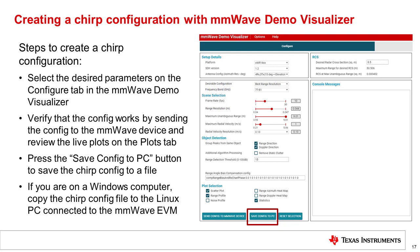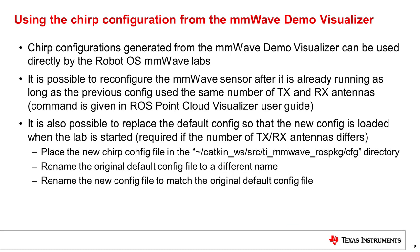If you are doing this on a Windows computer, you'll need to copy the chirp config file to the Linux PC which is connected to the millimeter wave EVM for the ROS labs. Chirp configurations generated using the millimeter wave demo visualizer can be used directly by the Robot OS millimeter wave labs since they rely on the mmWave SDK out-of-box demo.